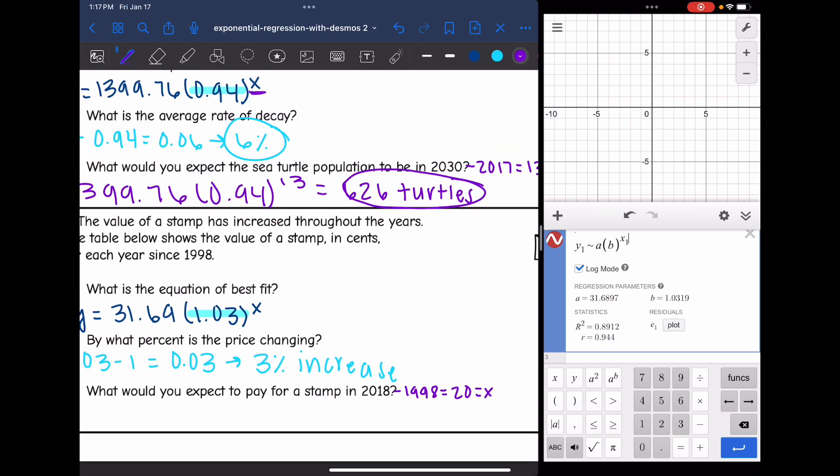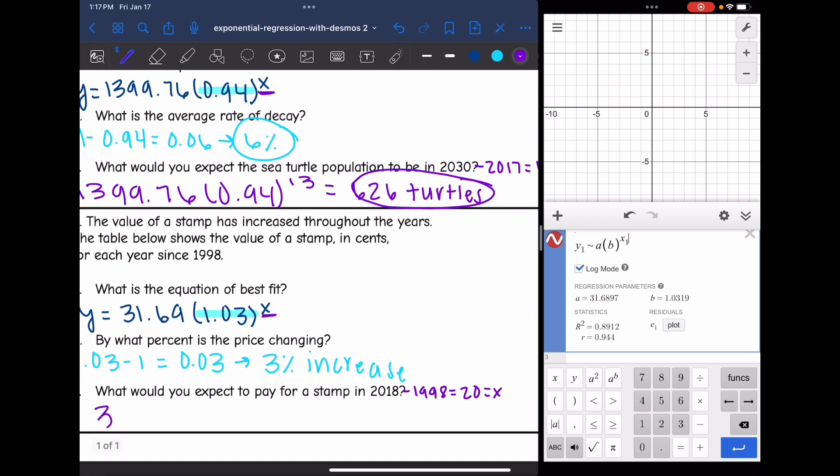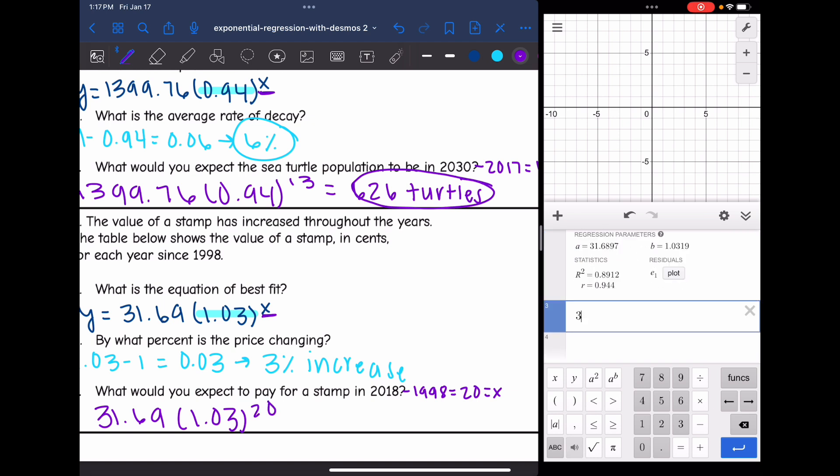So I have my equation of best fit. I'm going to replace X with 20. So I'll do 31.69 times 1.03 to the 20th. And it would be about 57 cents.